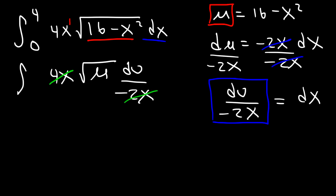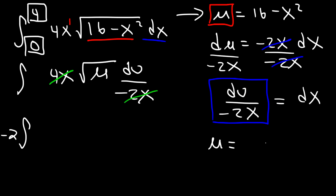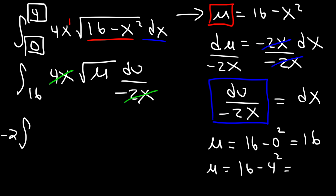4x divided by negative 2x equals negative 2. Now we need to change the limits. When x is 0: 16 minus 0 squared equals 16, so the lower limit becomes 16. When x is 4: 16 minus 4 squared is 16 minus 16, which equals 0. So the upper limit becomes 0. The square root of u is u to the one half.